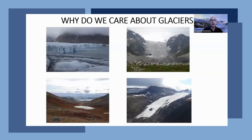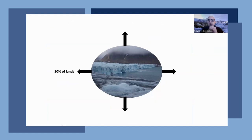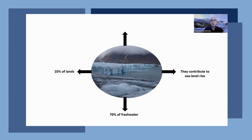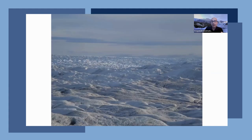Why do we care about glaciers? Glaciers, snow cover, and snow fields cover 10 percent of land, reflecting solar radiation from our planet. Glaciers store 70 percent of fresh water, and more than a billion people use water originating from glaciers for domestic use, crop irrigation, and energy production. Glaciers also contribute to sea level rise, so we are concerned about cities located at the seashore.